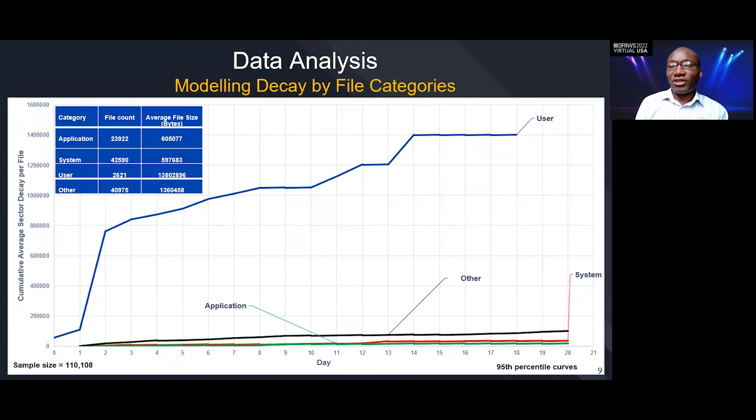We also looked at files by category. We looked at application files, system files, and user files. Application files are created and deleted by installed applications. System files are operating system files, so they are created and deleted by the operating system. And user files, of course, are created and deleted by users. We see that the average size of user files is larger than that of all the other types of files, and so user files decay faster. This is more a function of the size of the file than the category of the file, but it is important to mention the category as well because files in the user category are usually larger than all other types of files. So they occupy the larger surface area, so they tend to decay faster.